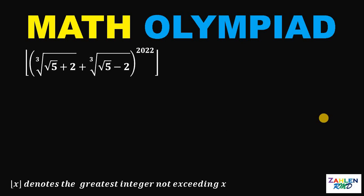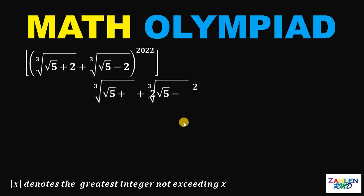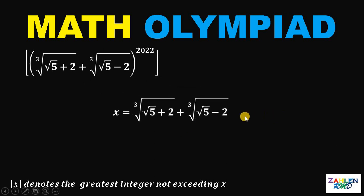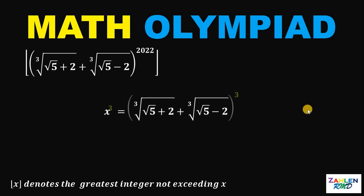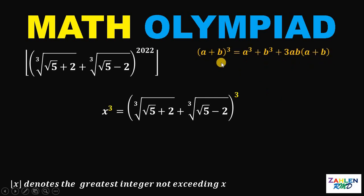Let's answer this question. The first thing to do is to let x equal the cube root of (√5 + 2) plus the cube root of (√5 − 2). What we're going to do is cube both sides to cancel out the cube roots. Since we have a sum of two cube roots, we will use the identity: (a + b)³ = a³ + b³ + 3ab(a + b).